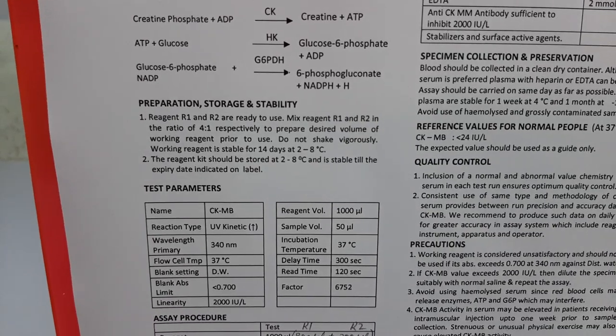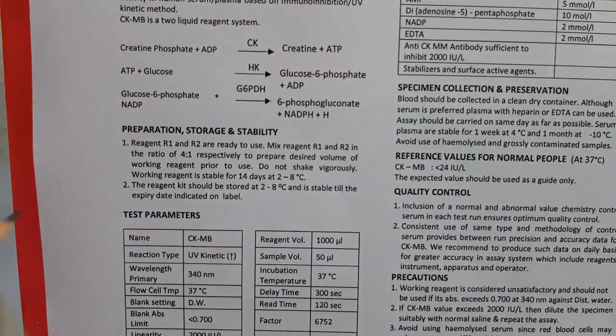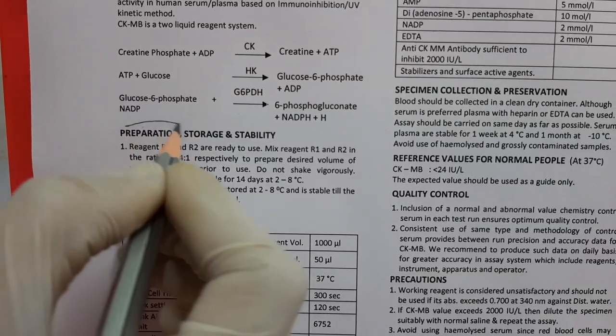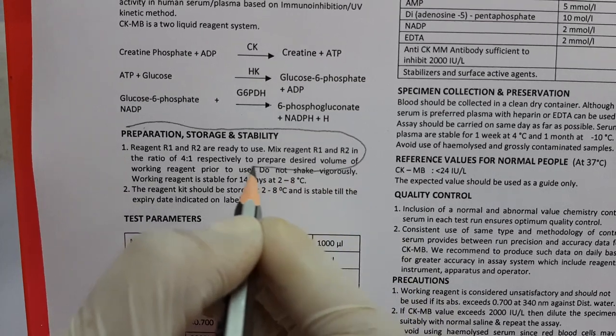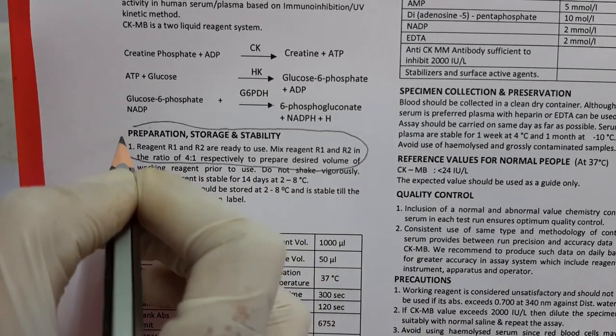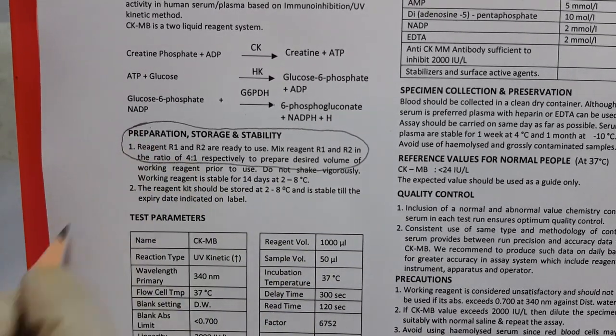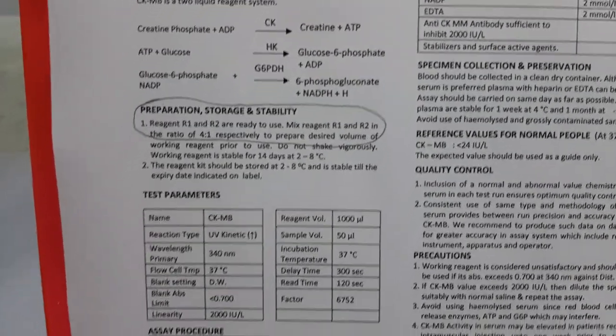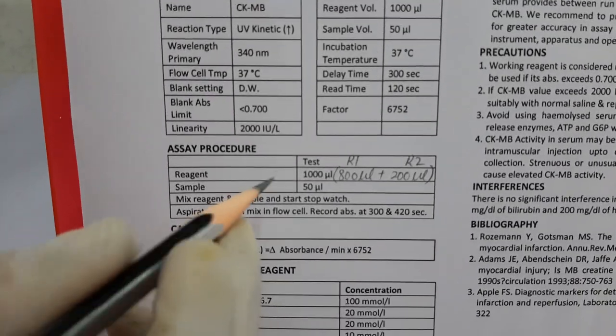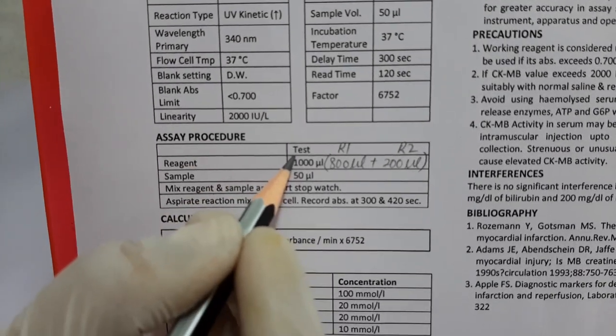Now, before looking at the procedure, let's pay attention to the preparation of working solution. CKMB is a double reagent system in which the working solution is prepared by mixing 4 volumes of R1 with 1 volume of R2. Now, according to the procedure, we need to take one tube for one test.